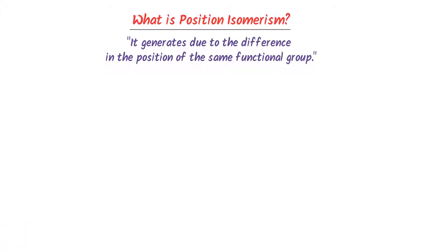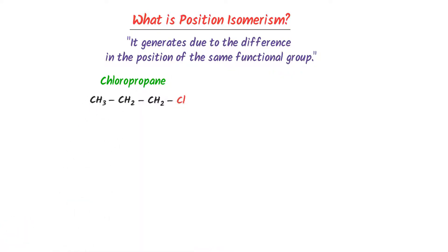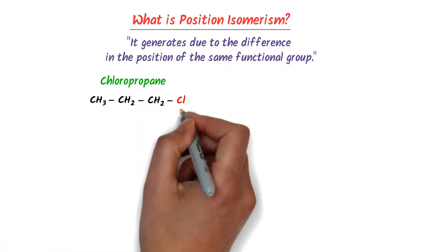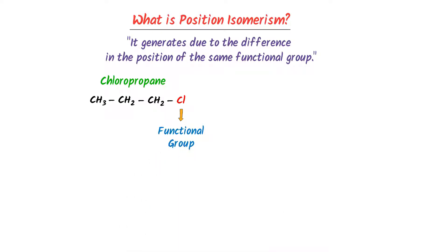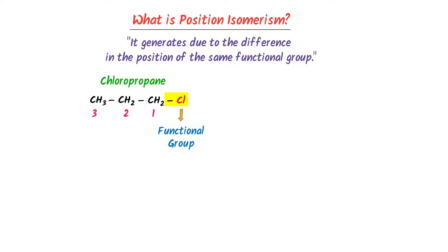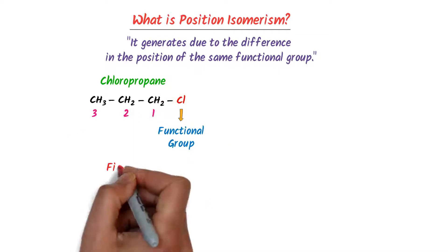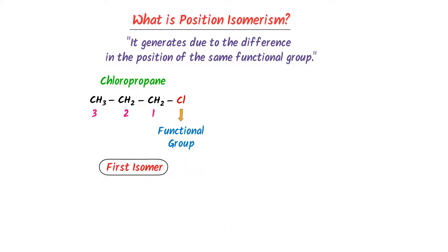For example, consider chloropropane. We can see that the functional group is chlorine. Here, this functional group of chlorine is present at the first carbon. So we say that this is the first isomer of chloropropane.